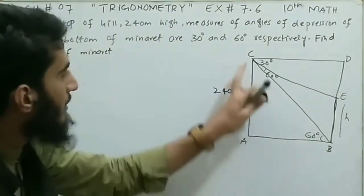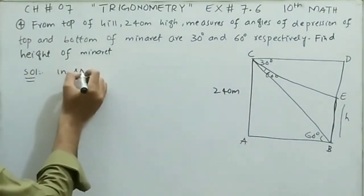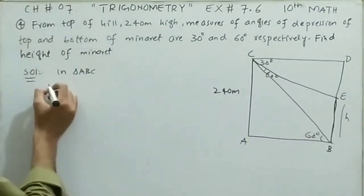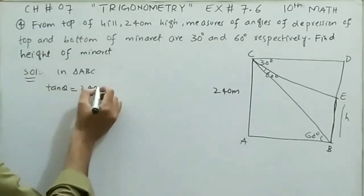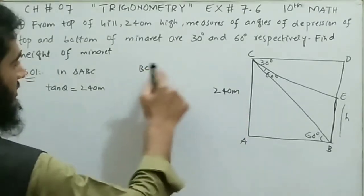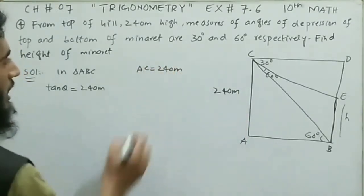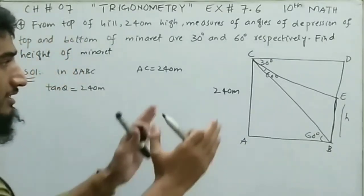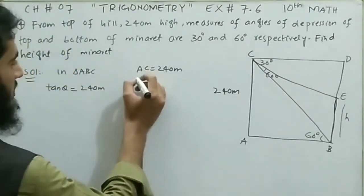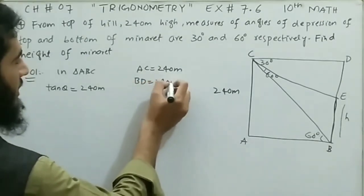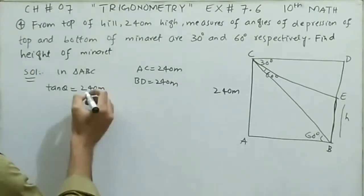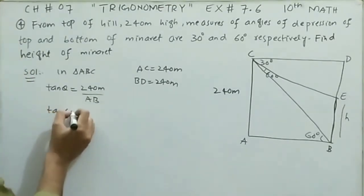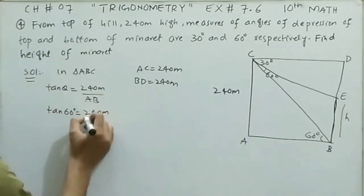Taking triangle ABC: the perpendicular distance AC is 240 meters and the angle is given but the base is not. We use tangent theta. Tangent theta equals perpendicular 240 meters divided by base AB. Since DB corresponds to AC, DB is also 240 meters. The theta here is 60 degrees, so tangent 60 degrees equals 240 meters divided by AB.